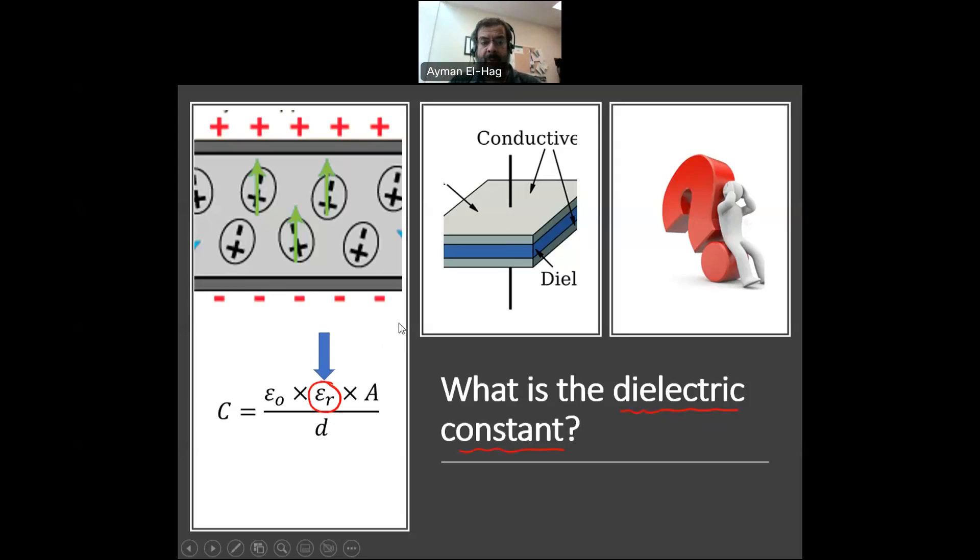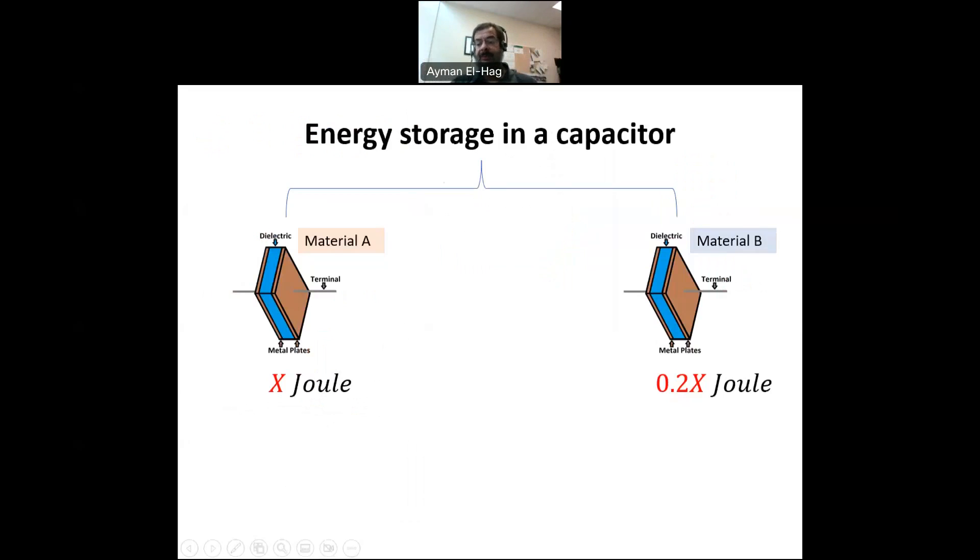So, we will start with capacitor. What is the capacitor? It's two parallel plates, conductors. Between them, there is a dielectric material inside which we store the energy. Imagine we have two capacitors. We apply the same voltage between the two parallel plates. They have the same surface area, both have the same surface area A, and they have the same distance between the two electrodes, D.